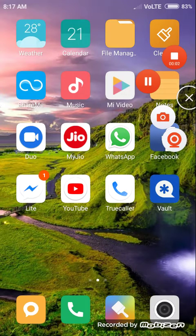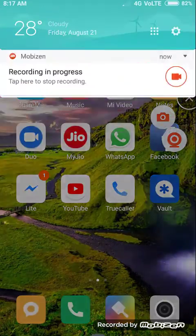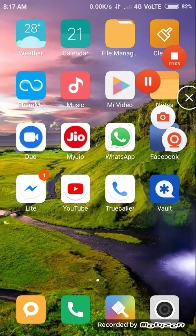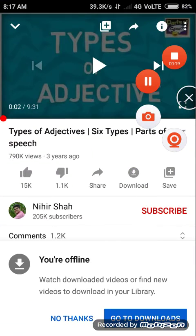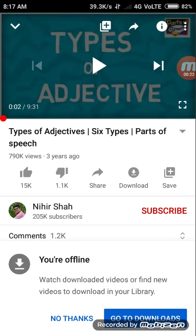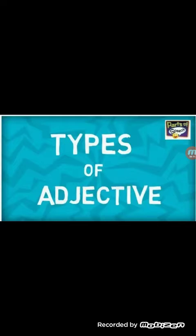My name is Anton and today I am going to show you all how we can learn the types of adjectives. Adjectives are describing words. Adjectives can be divided into six parts: number one adjective of quality, number two adjective of quantity, number three adjective of number, number four interrogative adjective, number five demonstrative adjective.